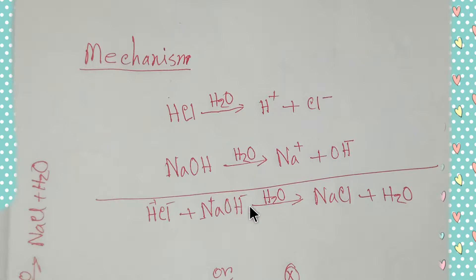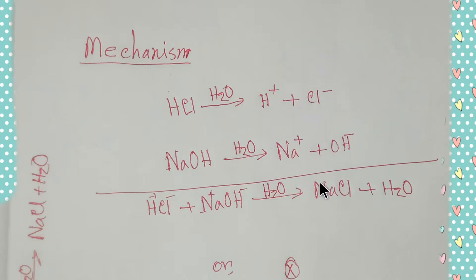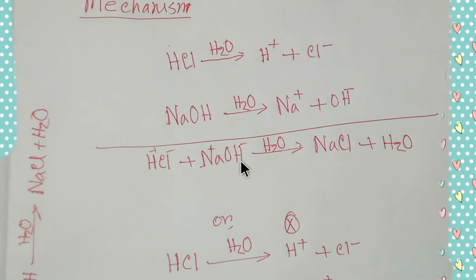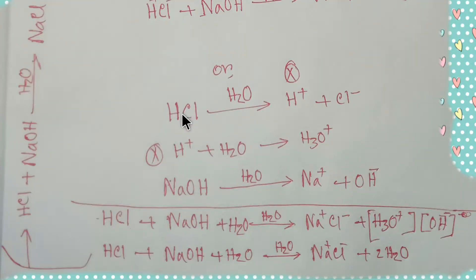So when you add HCl and sodium hydroxide together, these positive and negative ions combine: the H⁺ and OH⁻ form water, and the sodium ion and chloride ion form sodium chloride. This is one mechanism of this reaction.